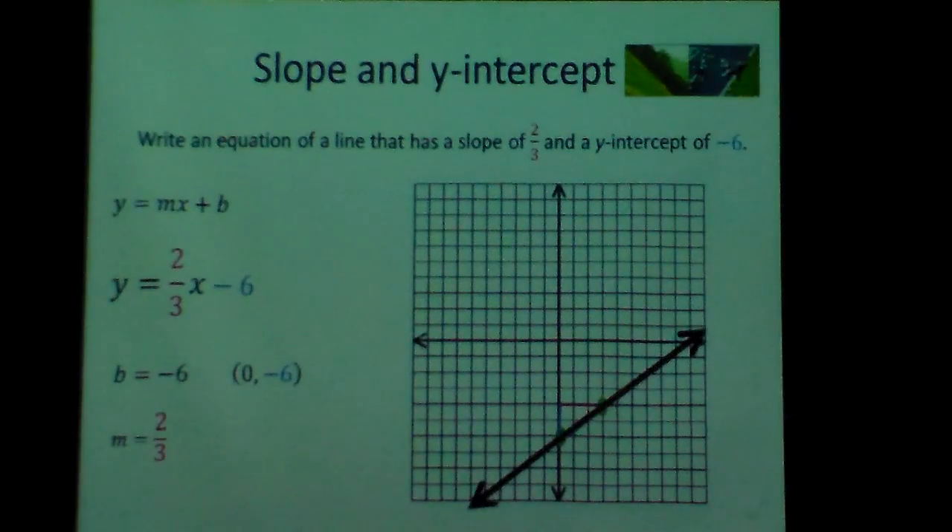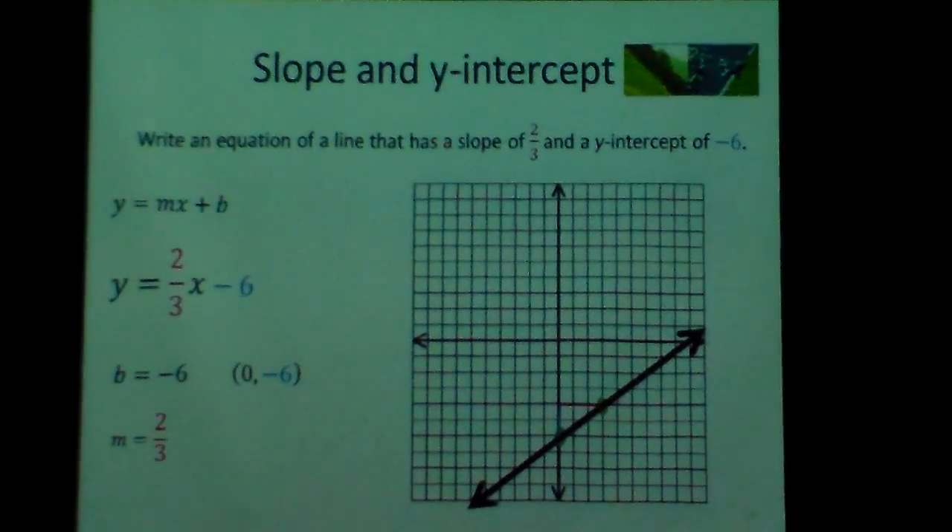Then I'm going to go up two and over three, put another dot, and I can connect my dots. That's what my graph would look like for slope-intercept.